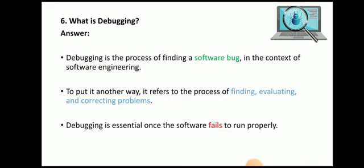What is debugging? Debugging is the process of finding a software bug in the context of software engineering. It refers to the process of finding, evaluating, and correcting problems. Debugging is essential once the software fails to run properly.